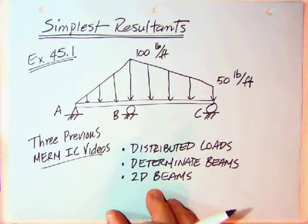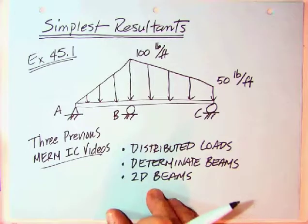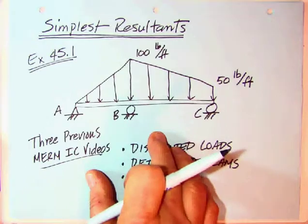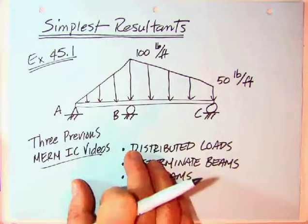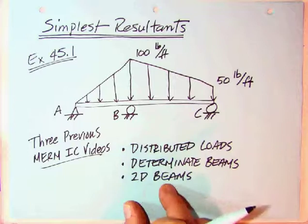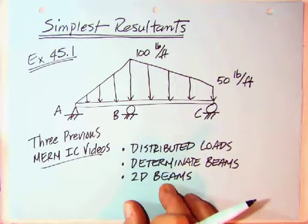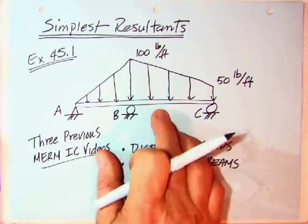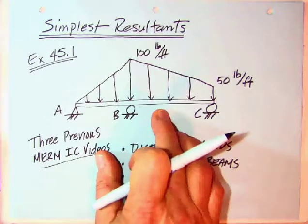However, in the interim, there's been quite a few questions about how you would replace this distributed load with a single load at a single point, which is referred to in textbooks as simplest resultants. It really isn't necessary. You can leave them the way we did and go on and solve them like we did in 2D beams. But somehow, in classes and courses, there's some importance given to being able to do that, to come up with a single force at a single location.